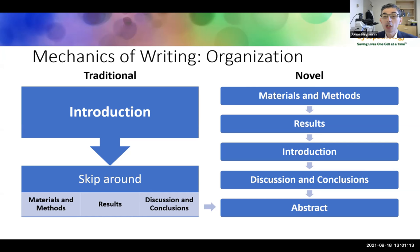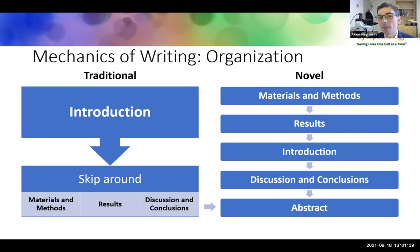When actually writing, decide the order you'll write in. Traditionally, people start with the introduction and skip between materials and methods, results, and discussion. A novel method is to start with materials and methods, then results, then introduction, and finally — the hardest part — discussion and conclusions. Whichever order you choose, you should write your abstract last, as it is really just a condensed version of what you've already written. Note that the introduction and methods may actually be written before data collection is complete to save time.